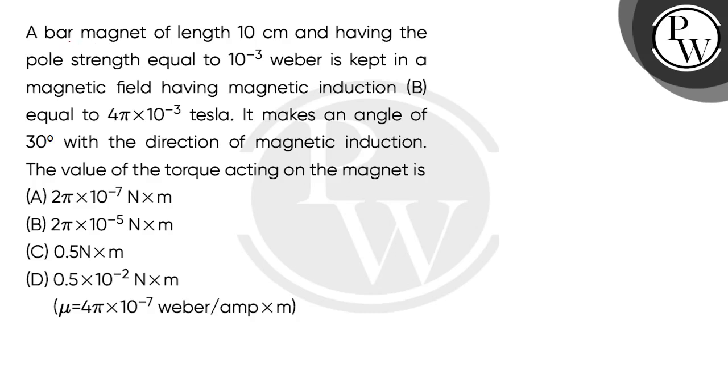Let's read the question. A bar magnet of length 10 cm and having the pole strength equal to 10 to the power minus 3 Weber is kept in a magnetic field having magnetic induction B equal to 4 pi multiplied by 10 to the power minus 3 Tesla. It makes an angle of 30 degrees with the direction of magnetic induction. The value of the torque acting on the magnet is: